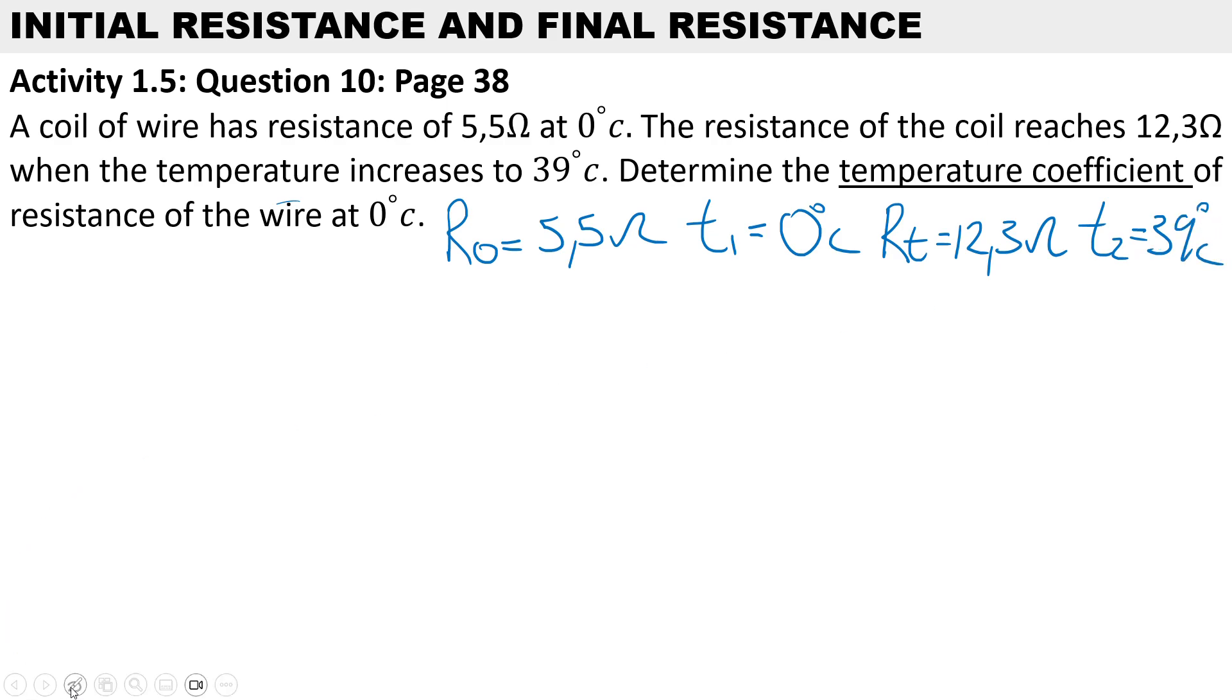using the following formula. We have the final resistance Rt equals the initial resistance R₀ multiplied by 1 plus the temperature coefficient α times temperature t. So the final resistance, substitute here, is 12.3 and the initial resistance